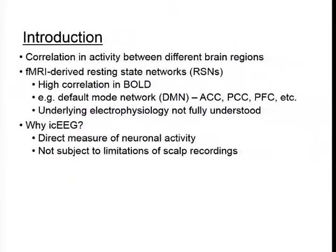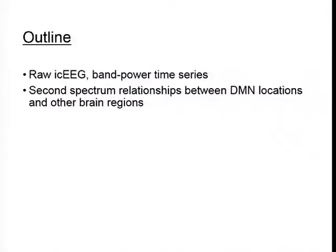Although the results are fairly consistent across numerous fMRI studies, the underlying electrophysiology is not fully understood. We chose to use intracranial EEG from epilepsy patients to understand these relationships from an electrophysiological perspective. The reason for using intracranial EEG is that it provides a direct measure of neuronal activity where we have coverage in these areas of interest, and it's not subject to limitations of scalp recordings such as smearing and loss of power through the skull.